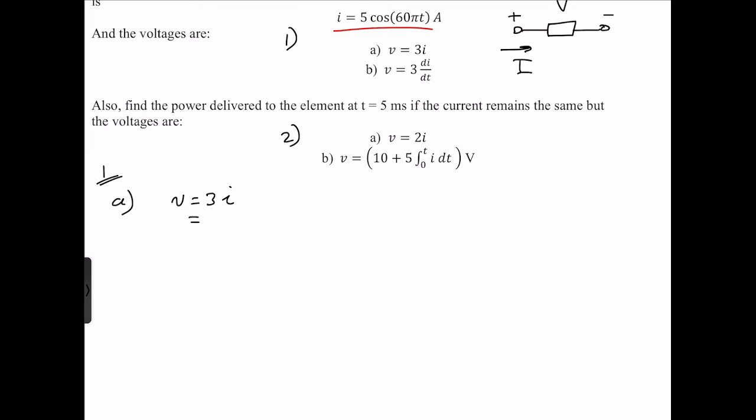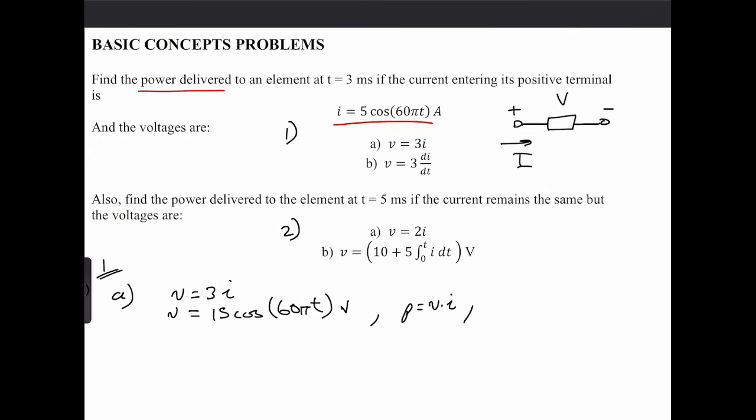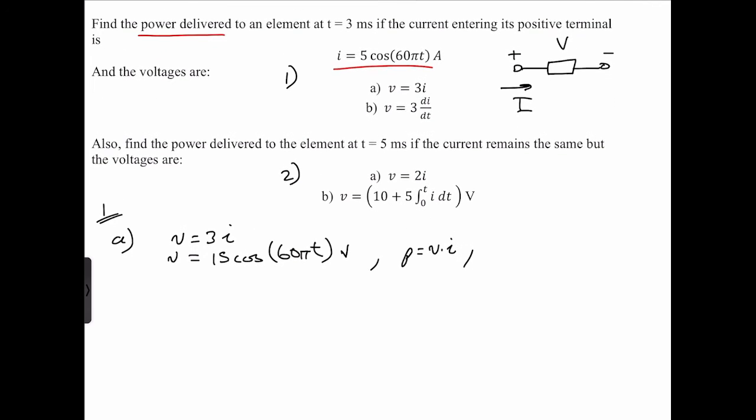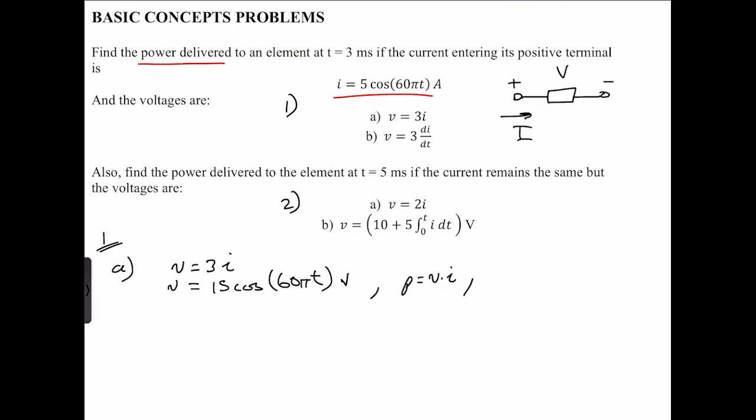So if we multiply i by 3, we then get 15 cosine 60 pi of t. And that is going to be in volts. We can find the power. So p is equal to v times i. And we know that. Also, what else do we have? Okay, so we need the three milliseconds. So t is equal to 0.003 seconds.